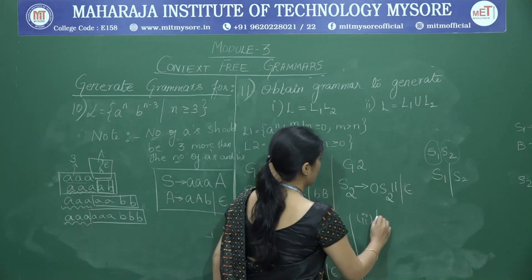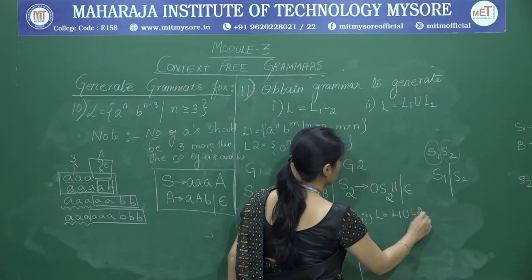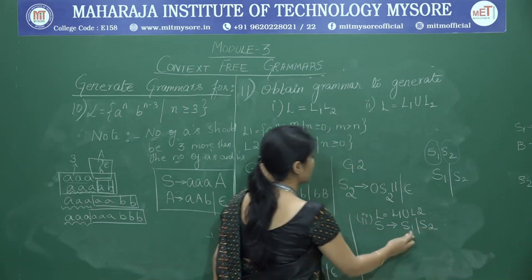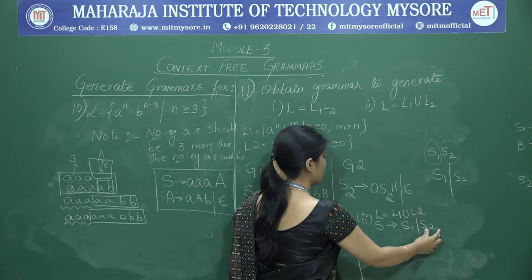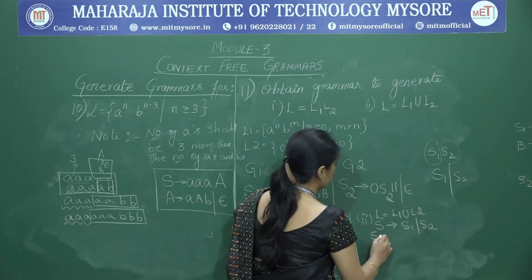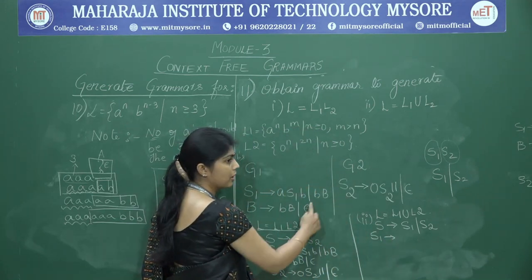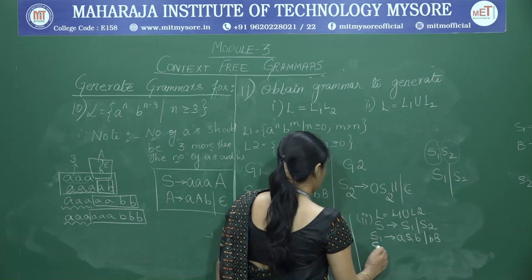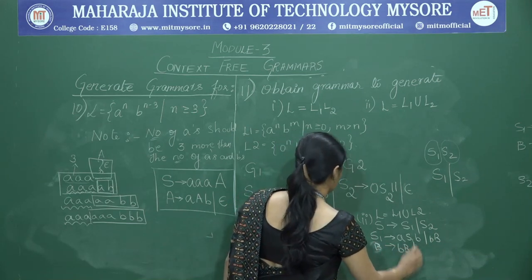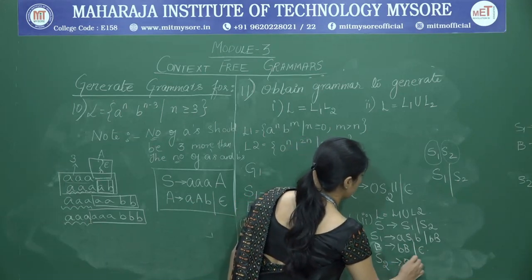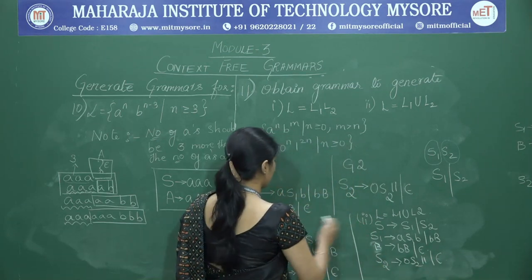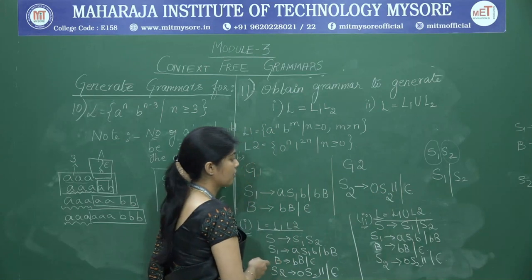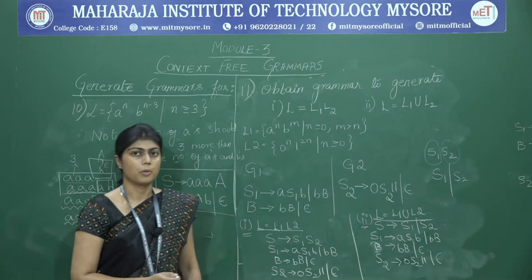For L = L1 ∪ L2 (union): S → S1 | S2. All productions from both grammars are included: S1 → aS1b | BB, B → bB | ε, S2 → 0S2 11 | ε. Choosing S1 selects strings from L1 and choosing S2 selects strings from L2. This completes the grammar design for the given problem statements.